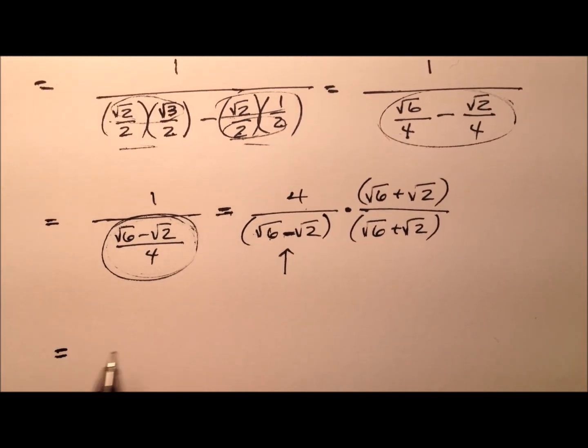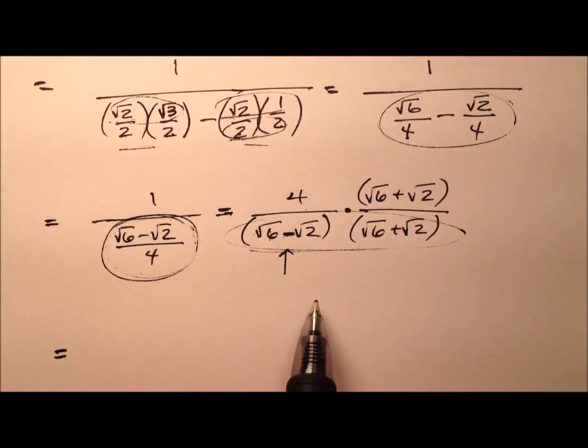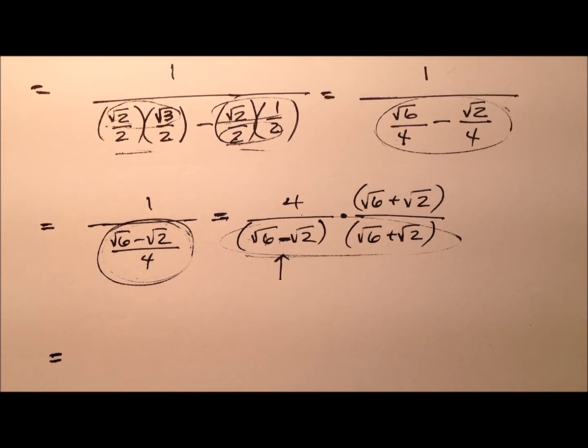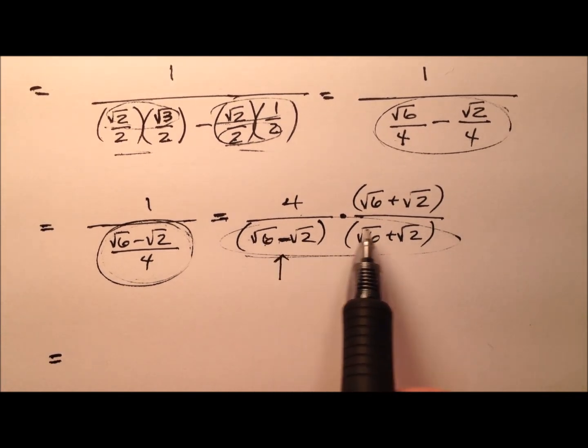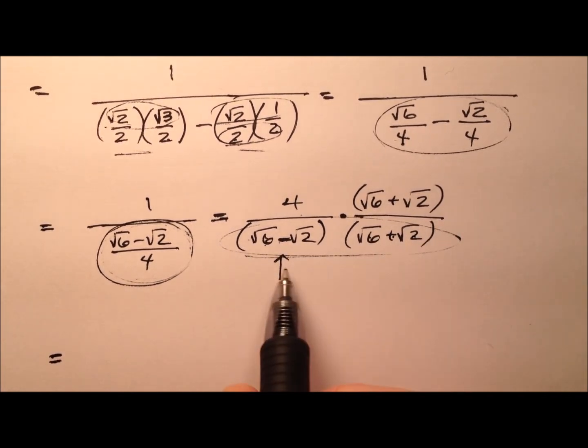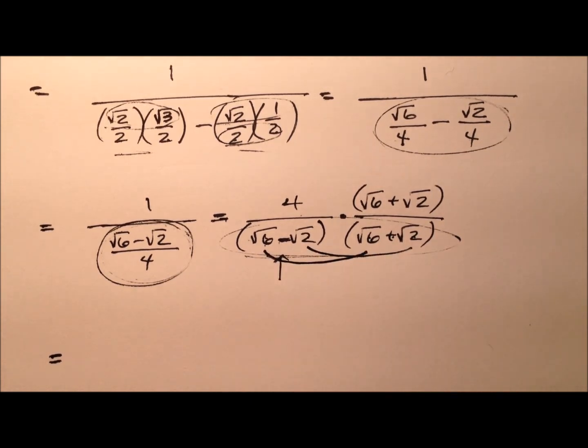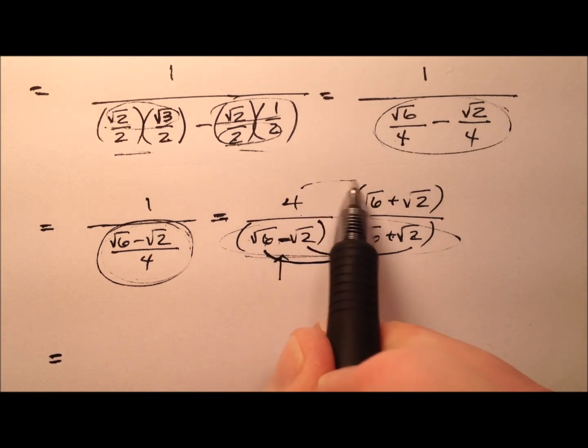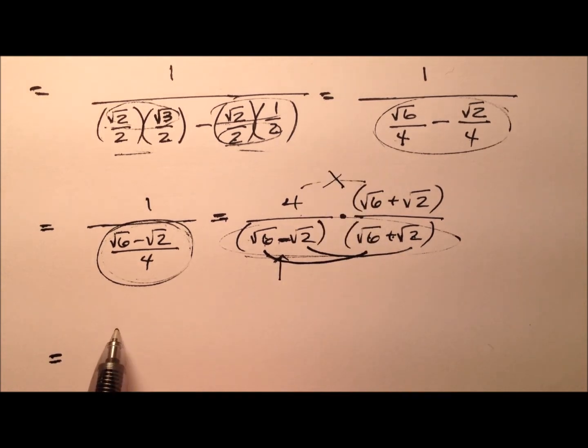Why would this be nice? It's because in the denominator, it sets up this difference of squares factorization, where I have a minus b and a plus b. So when I multiply, I'm only concerned with multiplying the first terms and the last terms together. So I'm not going to distribute this, and I'll show you why in a second.